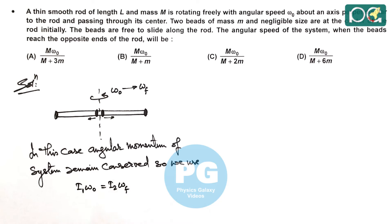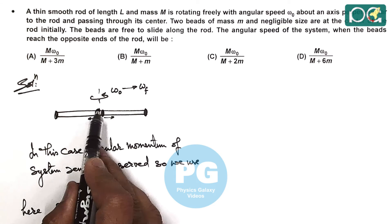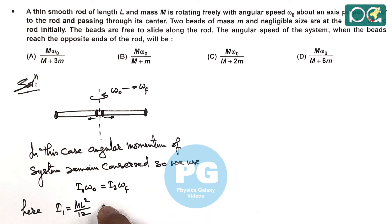So we can write here I1 is only given as ML square by 12 because the beads were at center and their moment of inertia can be neglected.